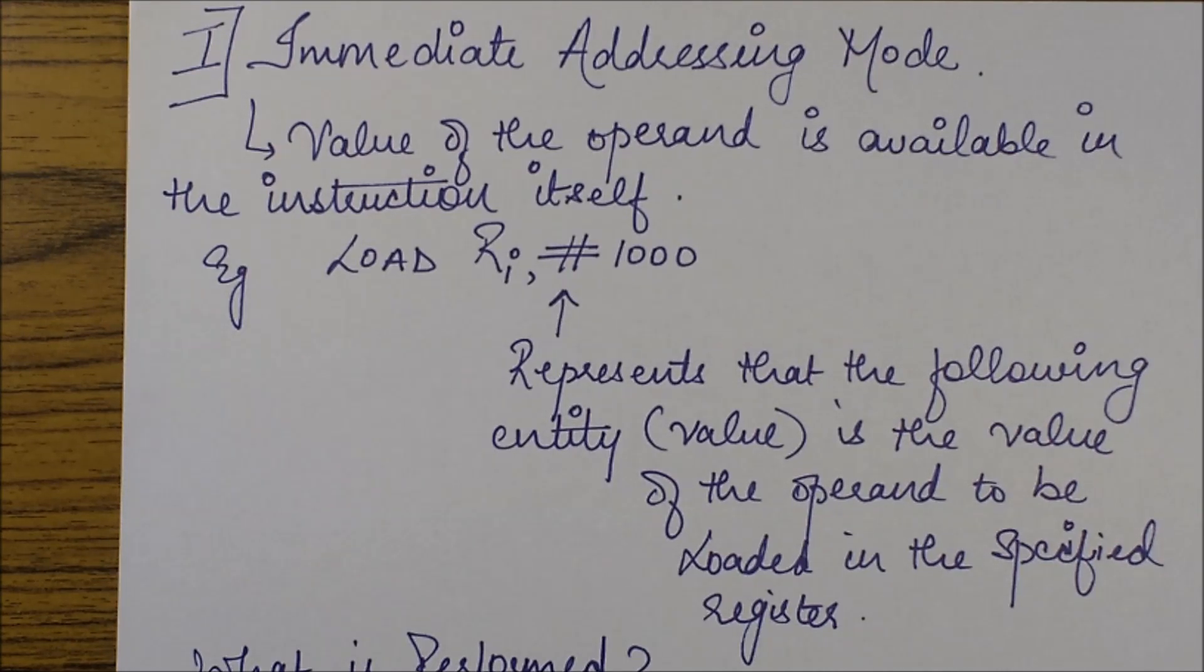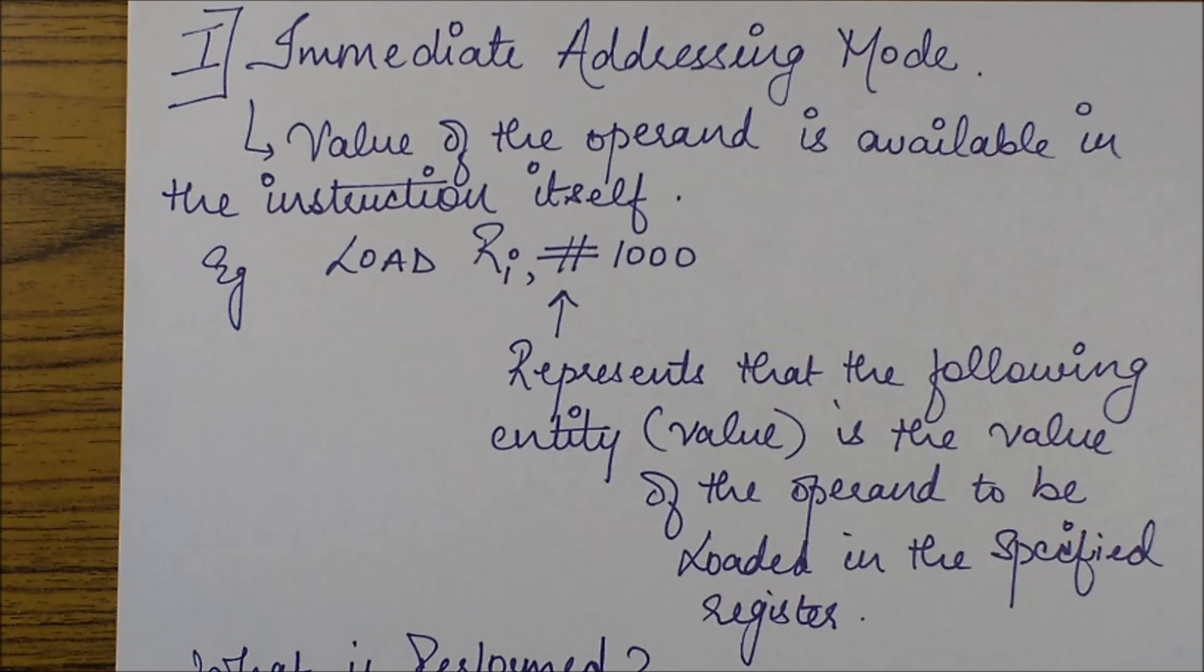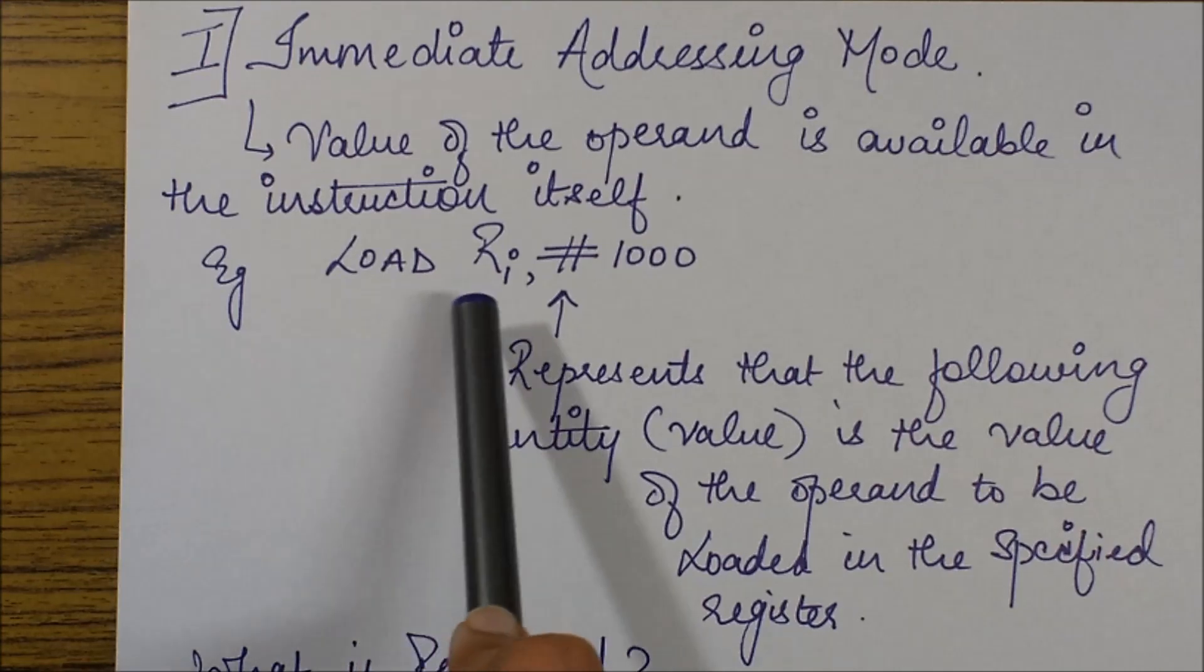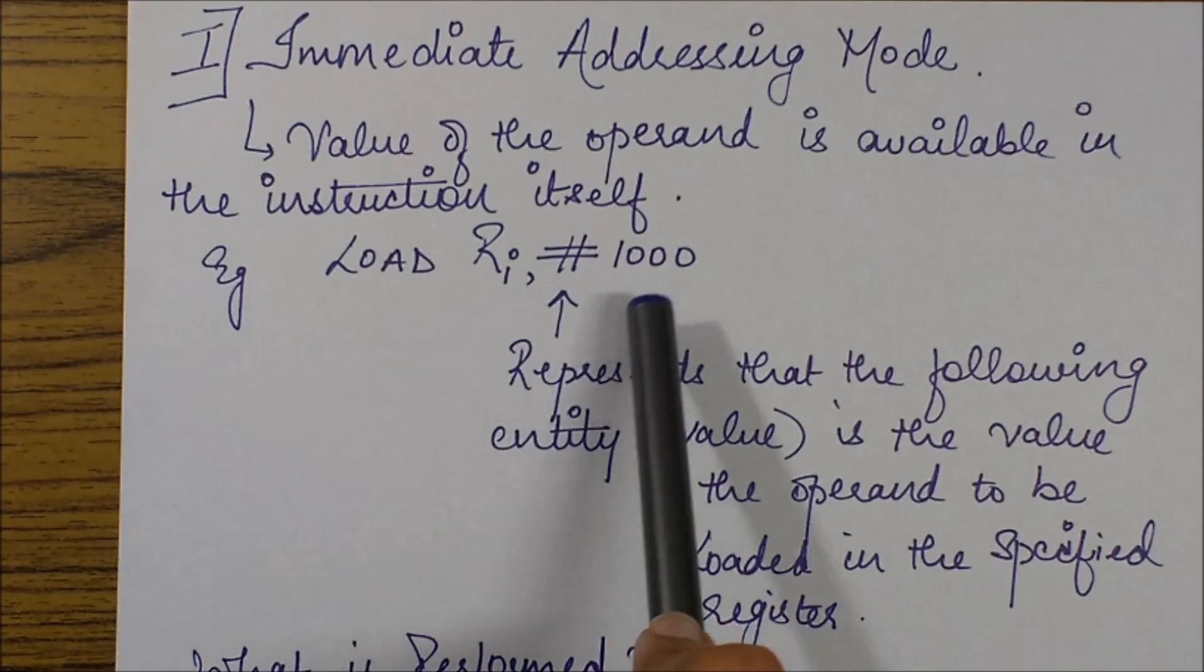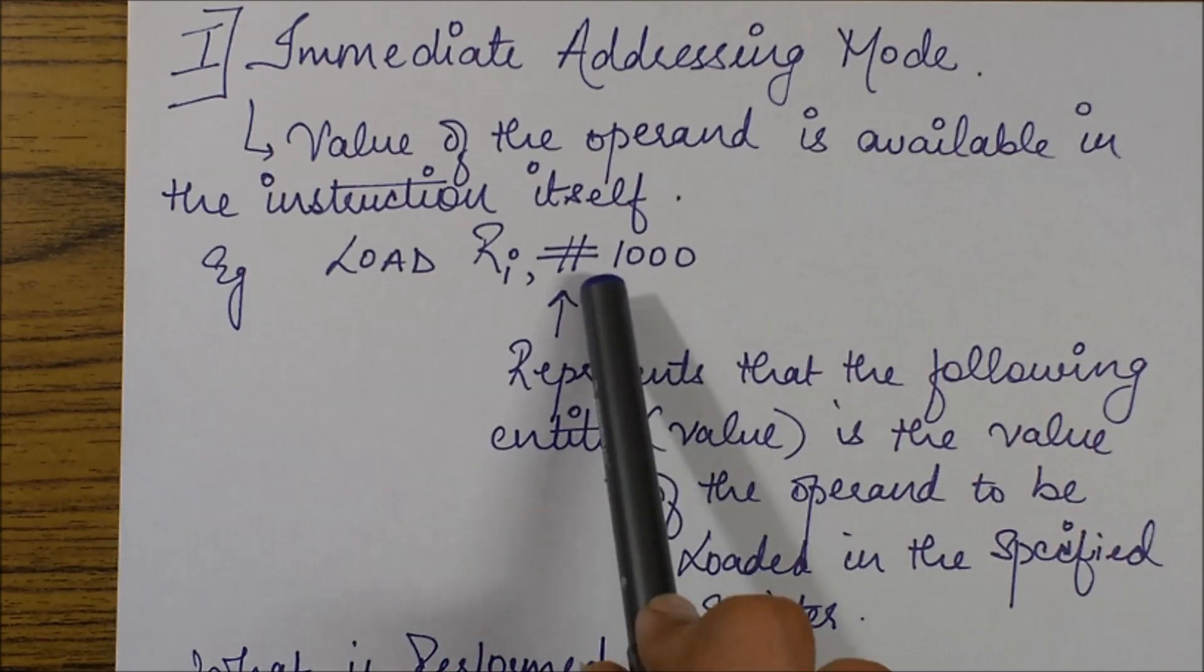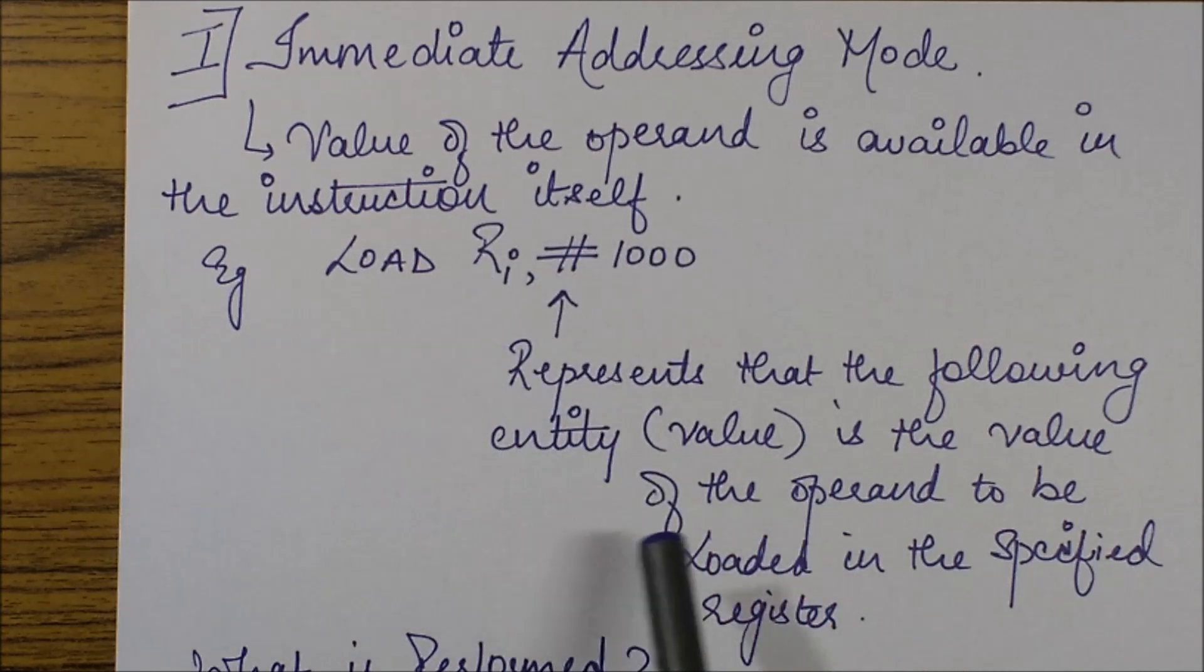Immediate addressing mode basically specifies the value of the operand which is itself available in the instruction. For example, the instruction which I have listed over here is LOAD Ri, #1000. So this hash basically represents that the following entity or value is the value of the operand to be loaded in the specified register.